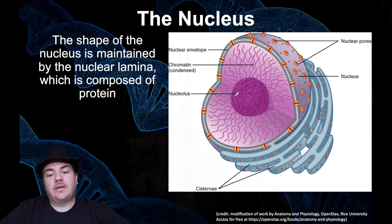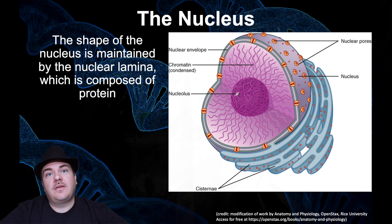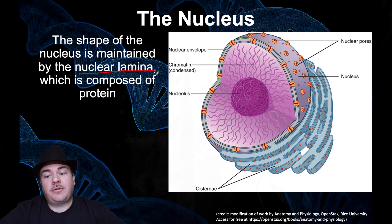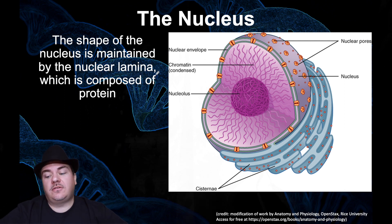The nucleus also has a very distinct shape and a lot of organization inside it. What maintains the shape of the nucleus is a set of proteins called the nuclear lamina. The nuclear lamina are the proteins that give the nucleus its shape and its organization.